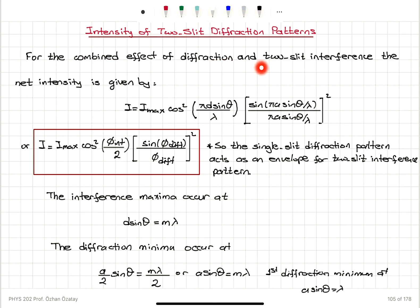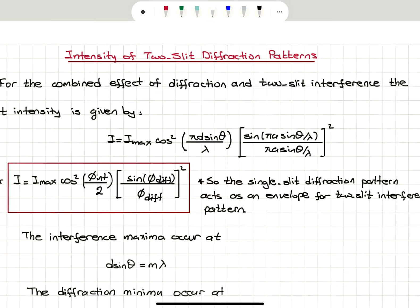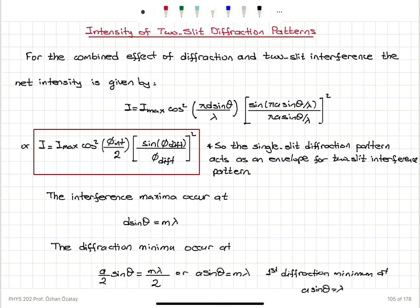We have the combined effect of diffraction and two-slit interference. In Young's double slit experiment, we have an intensity distribution given by I_max · cos²(φ/2), where φ is the phase difference, and from the single slit diffraction we have (sinφ/φ)². We can say that the total intensity has a contribution from the double slit interference — cos²(φ_interference / 2) — multiplied by the diffraction from individual slits — (sinφ_diffraction / φ_diffraction)². The single slit diffraction pattern acts as an envelope for the two-slit interference pattern.